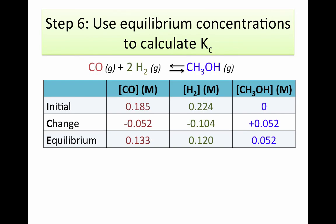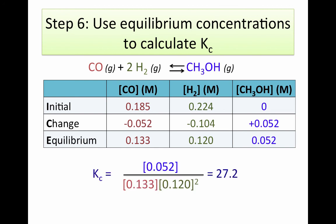Let's take our equilibrium concentrations and use them to calculate our equilibrium constant. We write our expression for Kc: the concentration of product divided by the concentration of carbon monoxide times the concentration of hydrogen gas raised to the second power, because it has a stoichiometric coefficient of 2. Putting in our equilibrium concentrations gives us a value of 27.2.